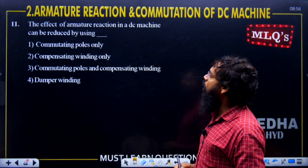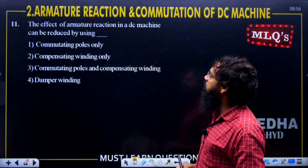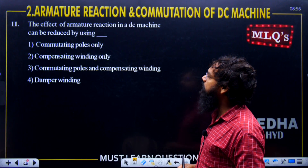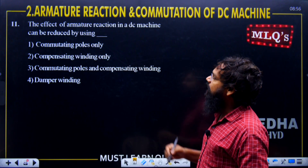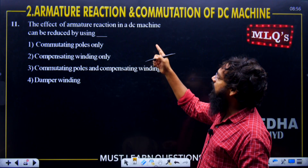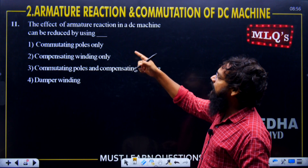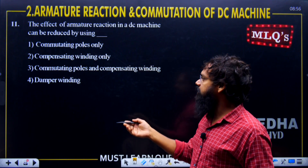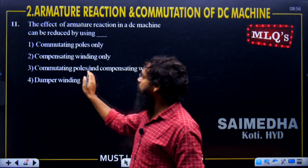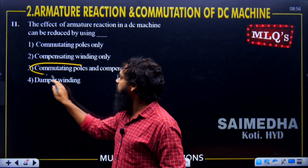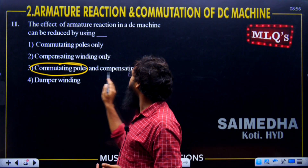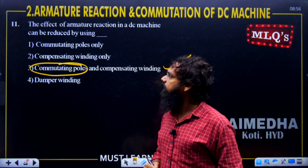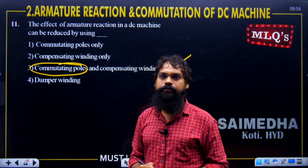The effect of armature reaction in a DC machine can be reduced by using commutating poles, interpoles, and compensating winding. Option number 3 is correct.